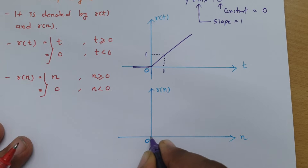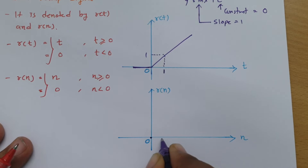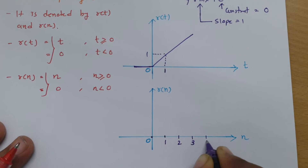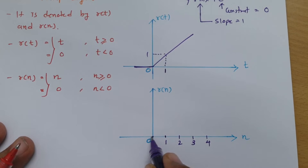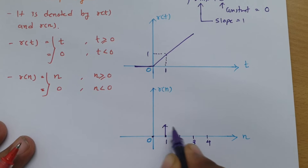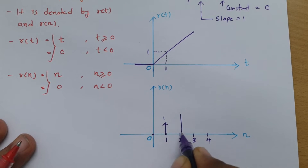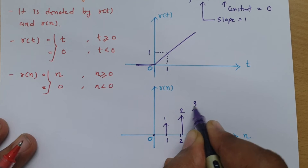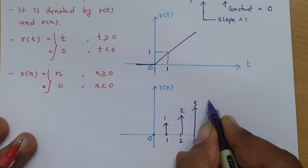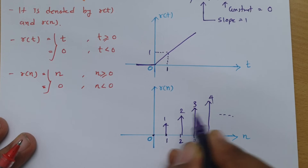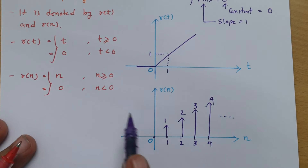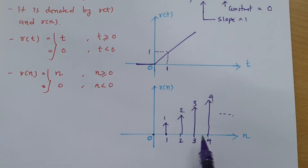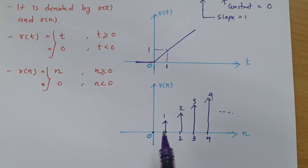In discrete time, if n = 0 the value is 0, at n = 1 it is 1, at n = 2 it is 2, at n = 3 it is 3, and at n = 4 it is 4. So the discrete time ramp signal looks like this — this is the unit ramp signal.